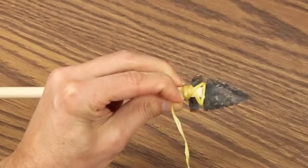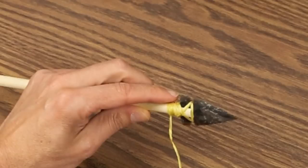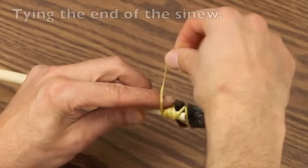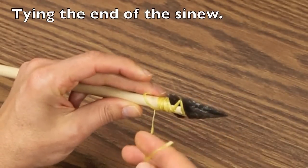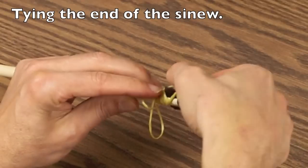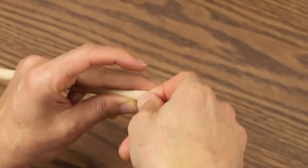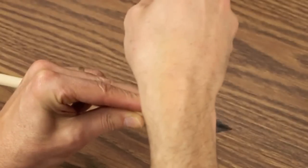At this point, you're left with a tail of a few inches of sinew, and you'll tie that off by wrapping it around the shaft. Place your finger against the shaft, take the sinew around the back creating a loop, remove your finger, feed the end of the sinew through that loop, and pull it tight and secure.